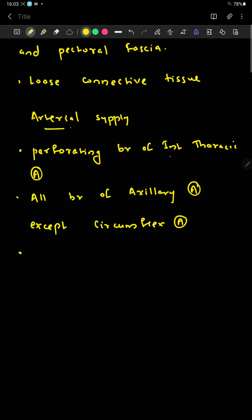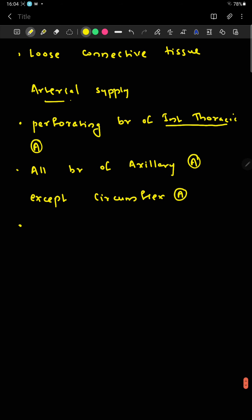The internal thoracic artery is a branch of the first part of the subclavian artery — basically one of its branches alongside the vertebral. The mammary gland also gets arterial supply from the intercostal arteries.